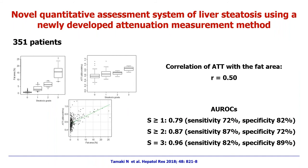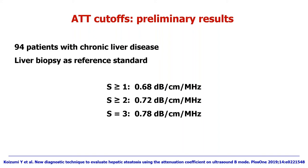In a series of more than 300 patients, this method has been correlated with fat quantity in liver biopsy with a pretty good correlation. In a preliminary series of almost 100 patients with chronic liver disease, cut-offs have been obtained to quantify steatosis, ranging from 0 to 68, with results given in decibels per centimeter per megahertz.